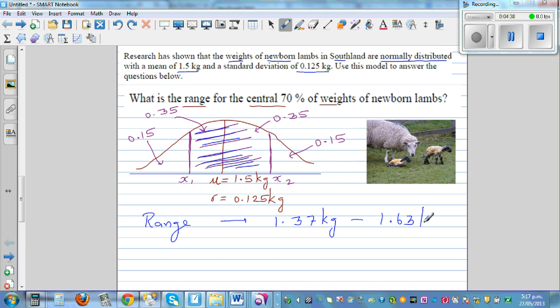If you look at the mean, mean is 1.5. This value is 1.37 and x2 is 1.63. So what does this mean? The middle 70% of the newly born lambs would weigh between 1.37 kg and 1.63 kg. There is 15% probability that a lamb would weigh over 1.63, and 15% probability that the lamb would weigh less than 1.37.